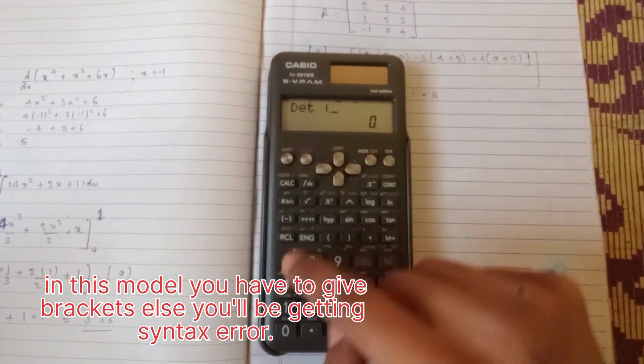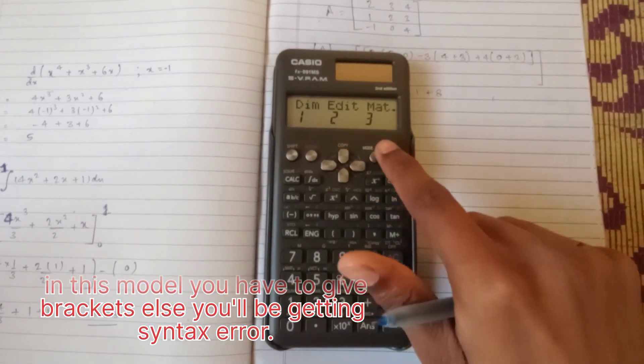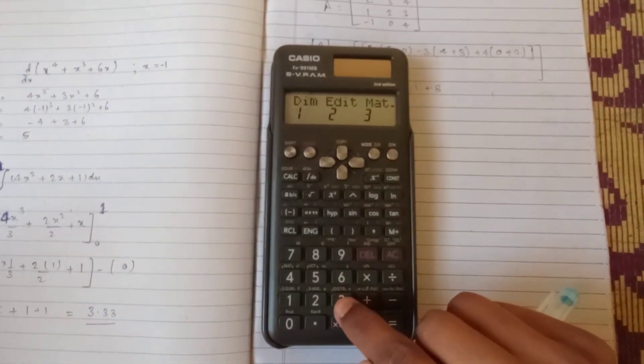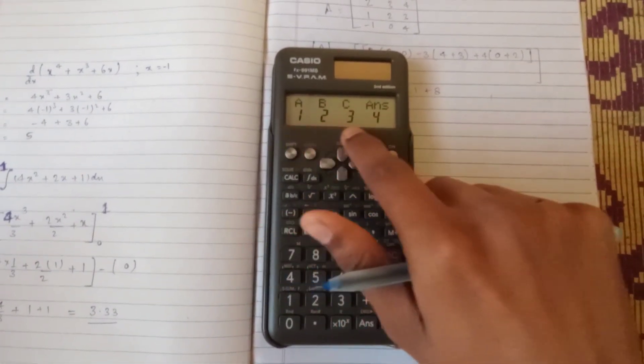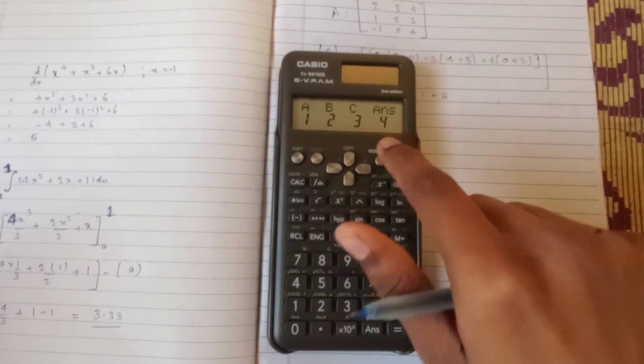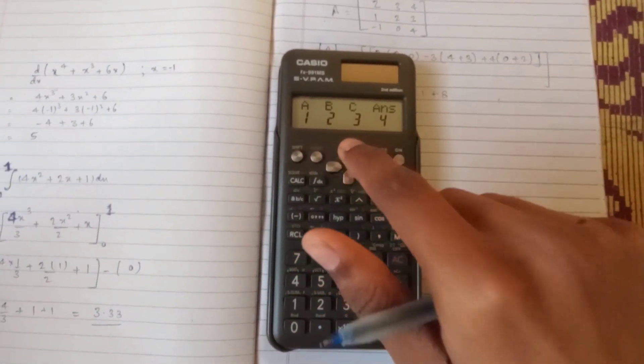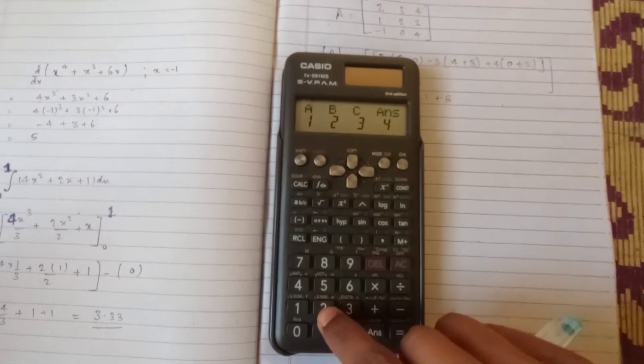Now again you have to press the shift plus 4 and go to the matrix option, that is 3, and the matrix we have opted in this calculator is B.